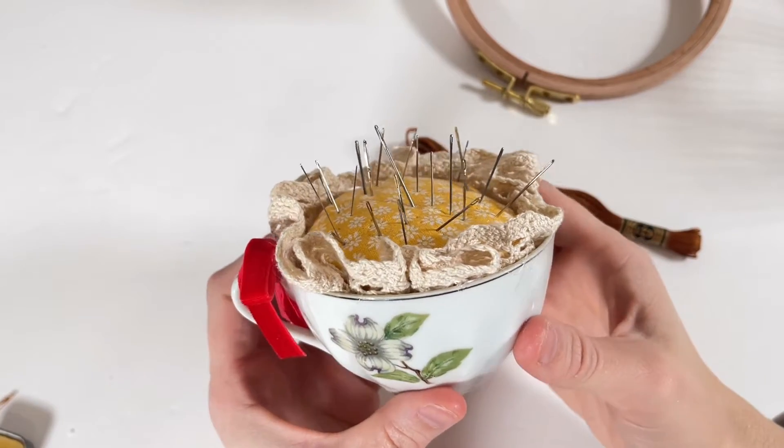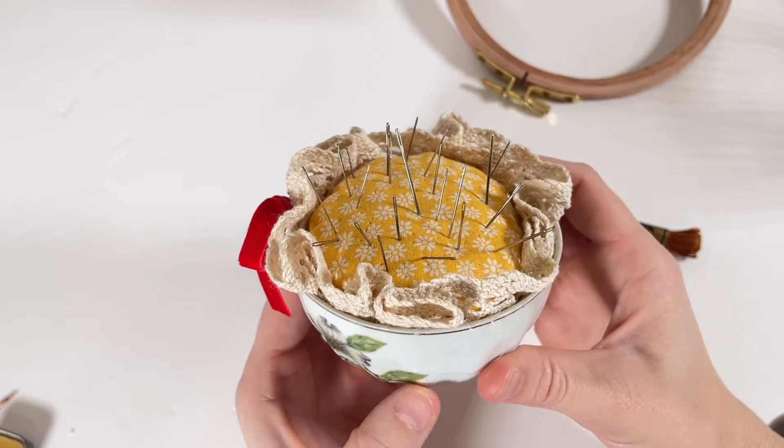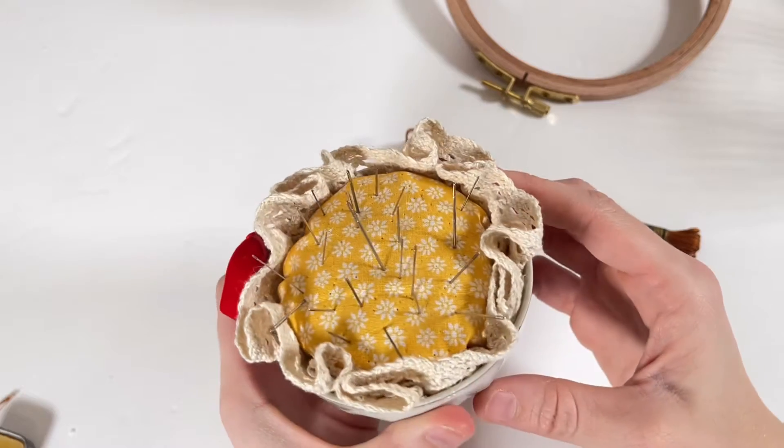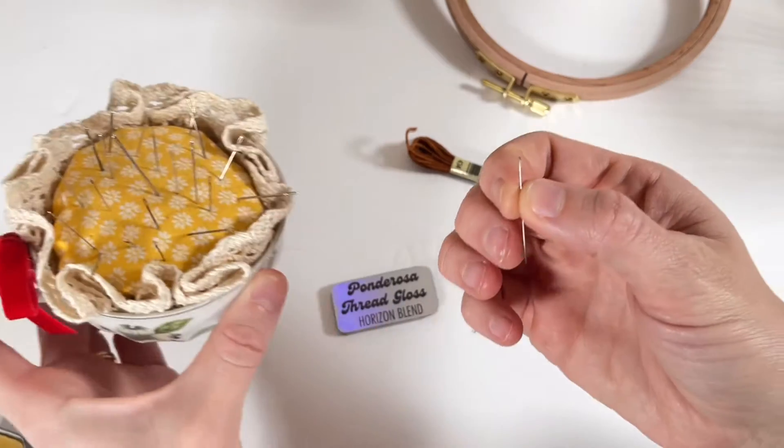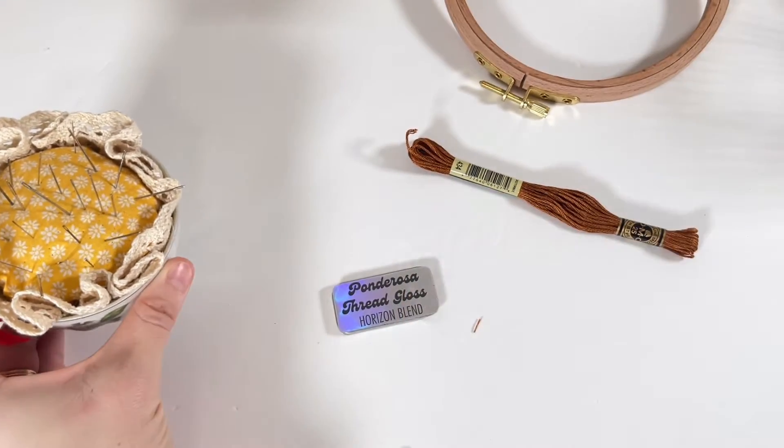The first thing you'll want to do is grab the right size embroidery needle. If you're using less strands of thread you're going to want to use a smaller needle, and if you're using more strands you'll use a larger needle. If you're not sure, I have a helpful needle size chart I'll link below.